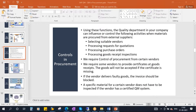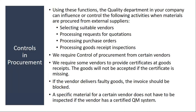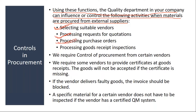Controls in procurement allow the quality department to influence or control activities when materials are procured from external suppliers. As a quality person, you have controls over the supply and purchasing activity - selecting suitable vendors, processing requests for quotations, processing purchase orders, and processing goods receipt inspections.